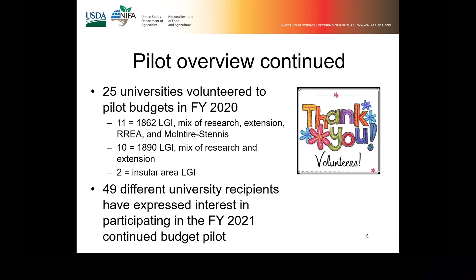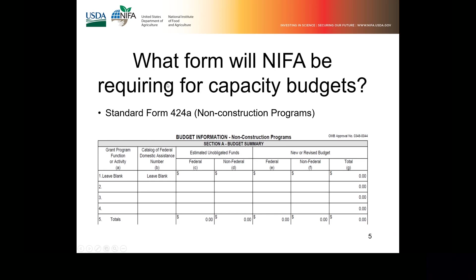You'll need to fill out just one SF-424A per program. What form will NIFA be requiring for capacity budgets? That is going to be the same as last year — the standard form SF-424 for non-construction programs, so it's a 424A.